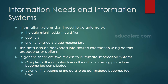The second reason is voluminous data. The volume of the data to be administered becomes too large, and in that case also we need to automate information systems. Normally, the data resides in card files, cabinets, or other physical storage mechanisms. There is a manual process — manually they maintain data or information.